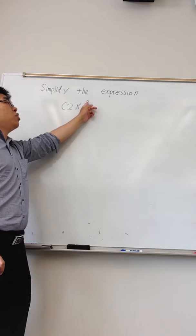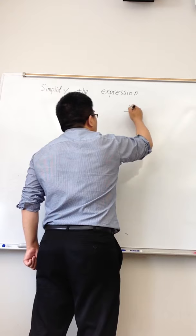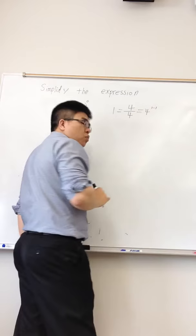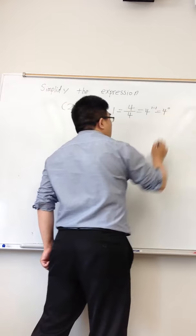So if you know how to solve 4 over 4, 4 over 4 just equals 1, right? And then using the quotient rule, that is 1 minus 1, the exponent is 1, so 4 raised to the power of 1 minus 1 is 4 raised to the power of 0. So 4 raised to the power of 0 just equals 1.